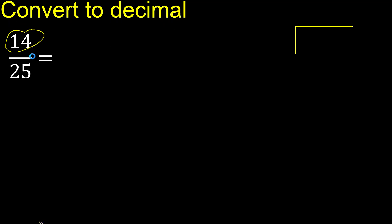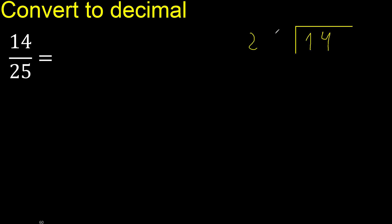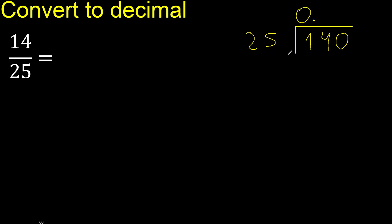14 divided by 25. 14 is less than 25, therefore complete — always complete with 0. Here: 0 point. 140 is not less than 25.